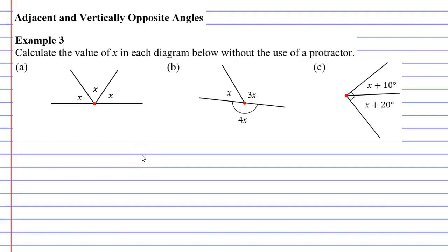In this video we are going to complete example 3 and calculate the value of x in each diagram below without the use of a protractor. So we're going to calculate them, not measure them. When people get faced with questions like these they get really stumped because there are actually no angles in any of the diagrams. So how do we fix this?